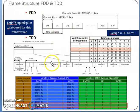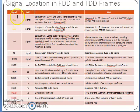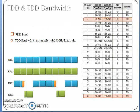DwPTS, UpPTS, and guard period are described in the special subframe configurations for TDD. If you want to increase or decrease downlink/uplink capacity, you can configure the frame accordingly. Signal locations for PSS, SSS, and other channels are all described for both TDD and FDD frames. Hope you liked this video — please subscribe, and feel free to message me with any queries. Thank you and have a good day.